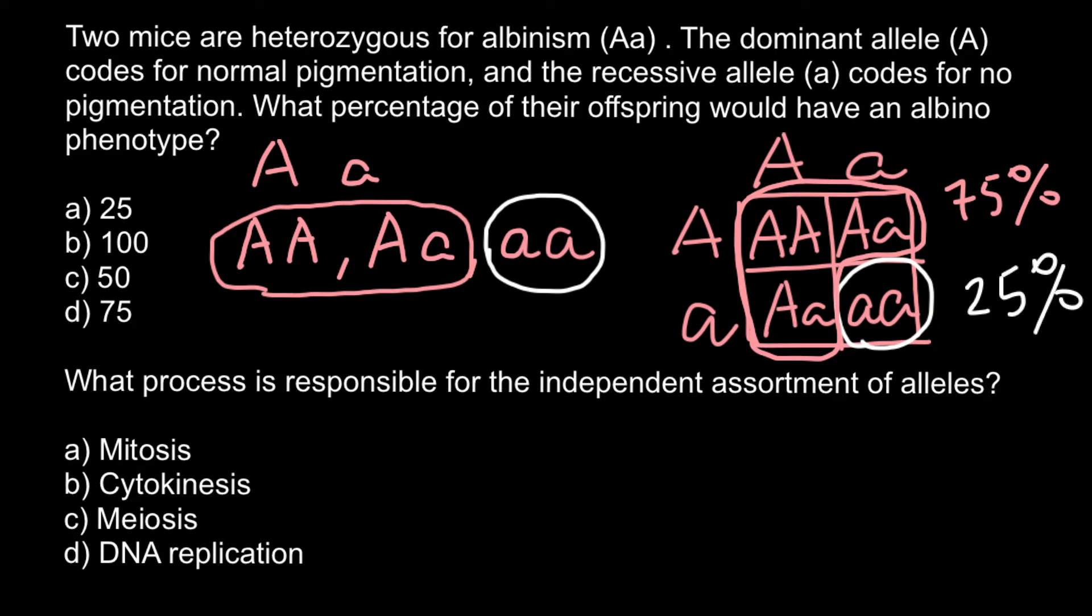Next question: What process is responsible for independent assortment of alleles? Here are four answers to choose from. Answer A, mitosis. Mitosis is a division of cells that are not sex cells, and this type of division can be found only in eukaryotes. Prokaryotes divide by binary fission.